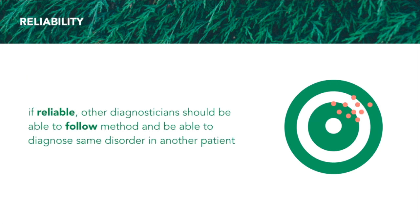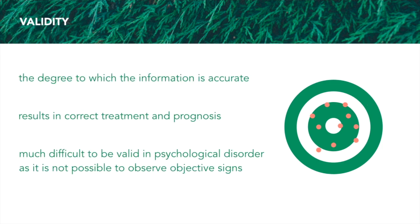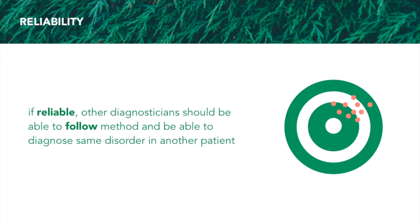Reliability is the extent to which other diagnosticians are able to follow the method and be able to diagnose the same disorder in another patient. What I want to stress is that validity and reliability are independent of each other — something can be valid, something can be reliable, and something can be both, but they're not dependent on each other. If the dots are centered towards a specific area, it means other people are able to follow the same method and come up with the same results, but it doesn't necessarily mean that the results are accurate.